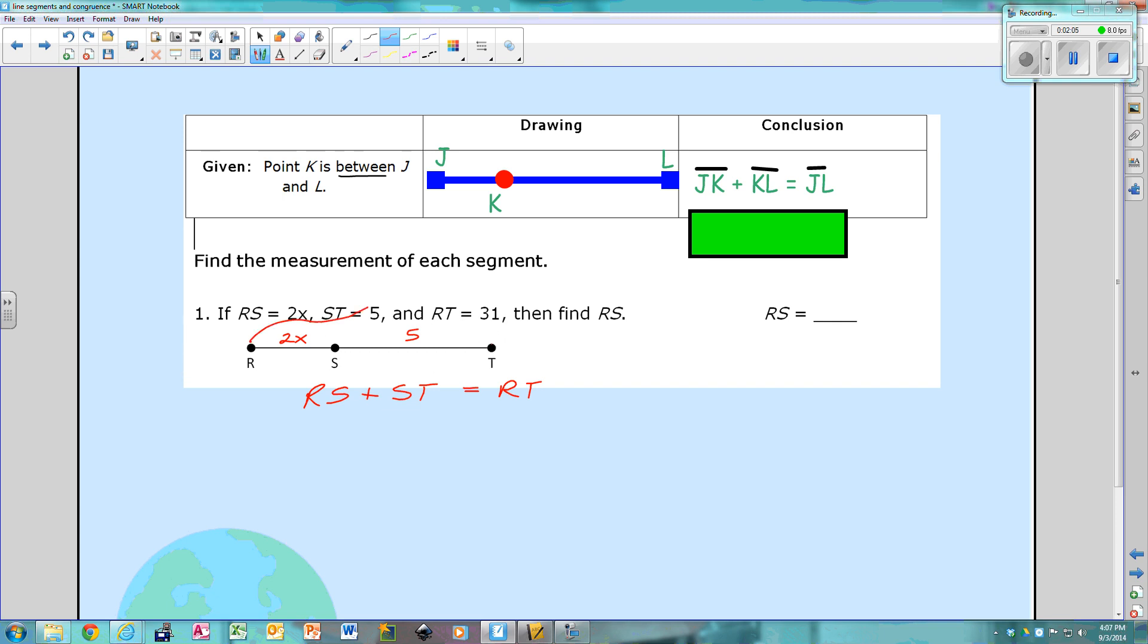Then it says RT is 31. Well, RT is the whole thing. So I'm going to do little funky arrows here, 31. So that means RS is 2X, plus ST is 5, equals RT, the whole thing, is 31. So now I just solve for X like I would any other time. So I'm going to subtract 5 from both sides, and I bring down what's left, 2X equals 26, and then divide by 2, cancels out, X equals, divide by 2 over here, 26. So I know that X is 13, but they're not asking for X, they're asking for RS. So if RS is equal to 2X, and X is 13, then 2 times 13 is 26, therefore RS is 26.